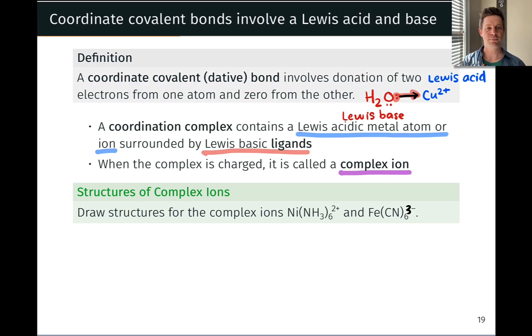So here we have a couple of examples, drawing structures for the complex ions Ni(NH3)6^2+ and Fe(CN)6^3-. To start here, let's start with the nonmetal side. Let's start with the ligand, because these are Lewis structures that we're familiar with drawing from previous experience.